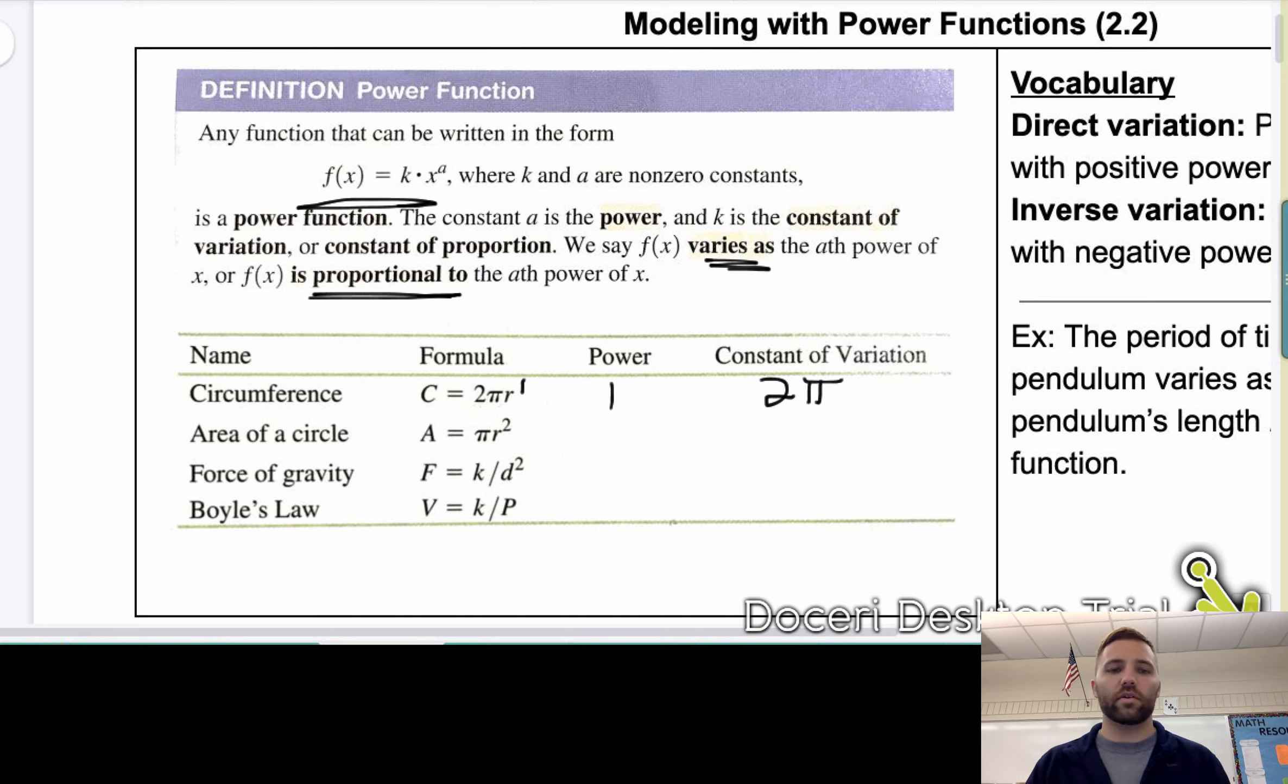For the area formula, area equals πr squared. The power is clearly 2, because that's what the variable is being raised to. And π is the constant of variation.